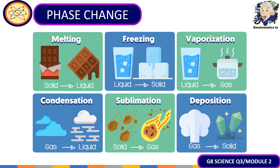Let us sum up all our learnings for today. Melting is the process where solid turns into liquid. Freezing is where liquid turns into solid. Vaporization is where liquid turns into gas. Condensation is where gas turns into liquid. Sublimation is from solid into gas. And deposition is the process where gas is turned into a solid.